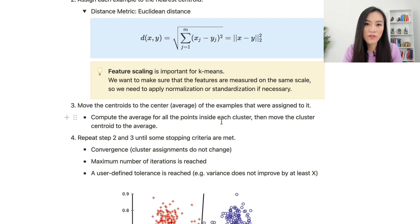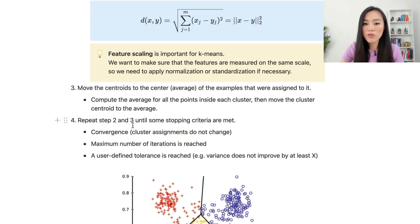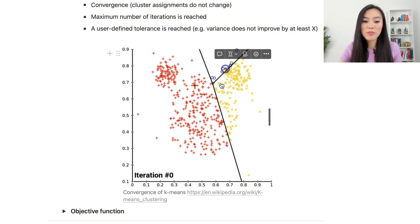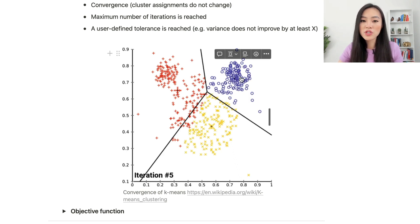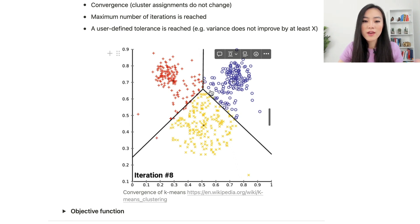Finally, we repeat step 2 and 3 until some stopping criteria are met. It can be that the clustering reaches convergence, meaning that cluster assignments do not change, or maximum number of iterations is reached. It can also be a user-defined tolerance is reached, for example the variance does not improve by at least a certain amount. Here's an example of convergence of K-means: initially we choose three centroids and the positions of them keep changing until the very last few iterations. The positions do not change that much, which means that it reaches convergence.